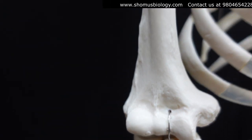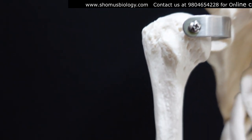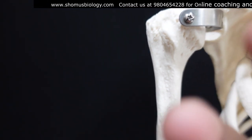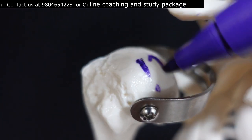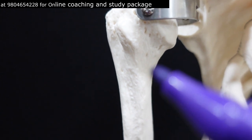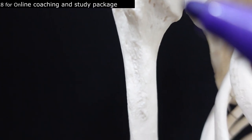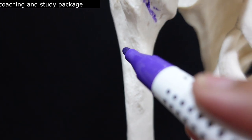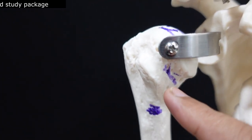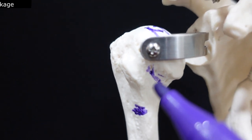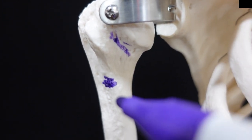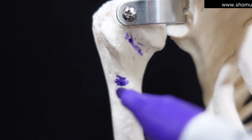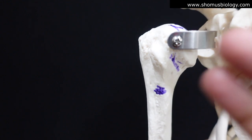Let's talk about the proximal epiphysis or proximal end. In the proximal end we have three structures: first is the head, second is the anatomical neck, and third is the surgical neck. The anatomical neck is the slightly narrowed region below the head, while the surgical neck is the common site for fractures — that's why we call it surgical neck.